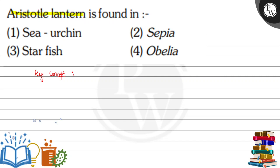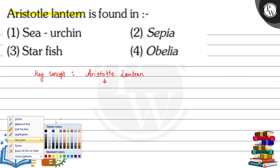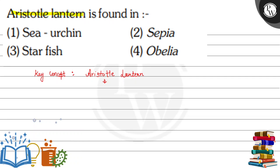The key concept is that we should know about the Aristotle's lantern and the organism in which it is found. The Aristotle's lantern is a mouth apparatus — we can call it the mouth structure — and it is the mouth apparatus of the sea urchin.